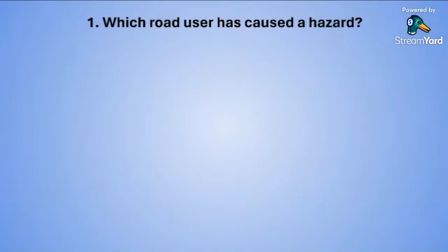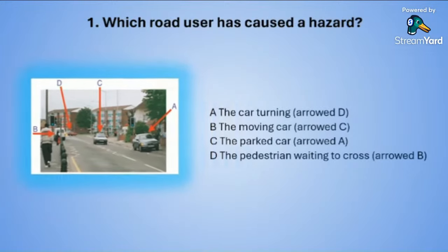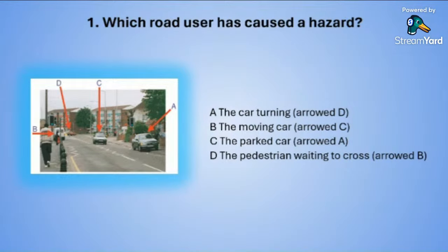Question number one. Which road user has caused a hazard? Pay attention to the image. A: the car turning, marked with arrow D. B: the moving car marked with letter C. C: the parked car with arrow A. Or D: the pedestrian waiting to cross, marked with arrow B.